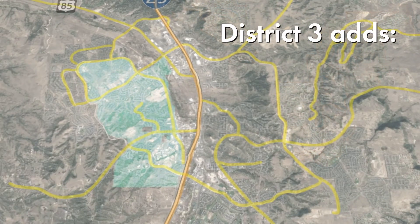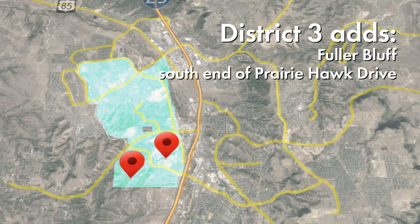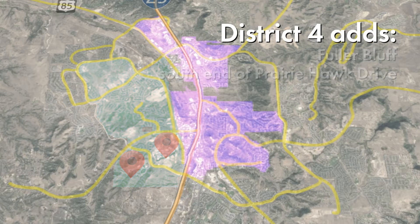District 3 includes Red Hawk, Castle Highlands, and some of the Meadows. This district gets voters from a couple of districts: Fuller Bluff, previously in District 1, and those on the south end of Prairie Hawk Drive, previously in District 4.